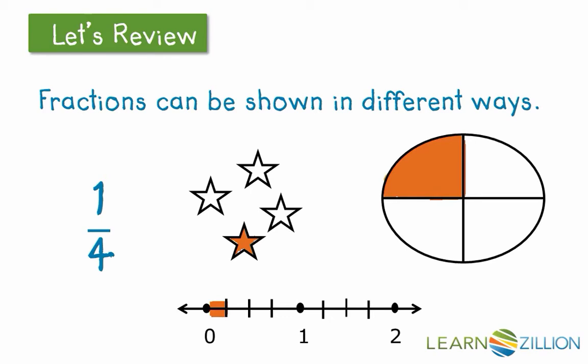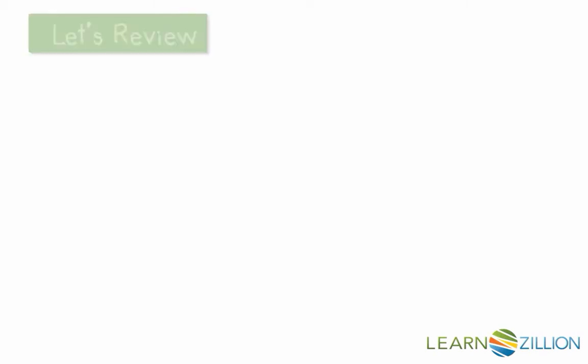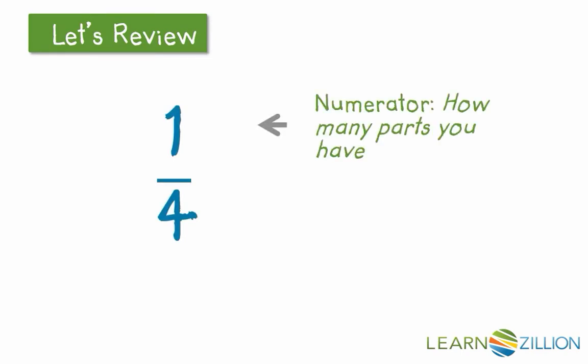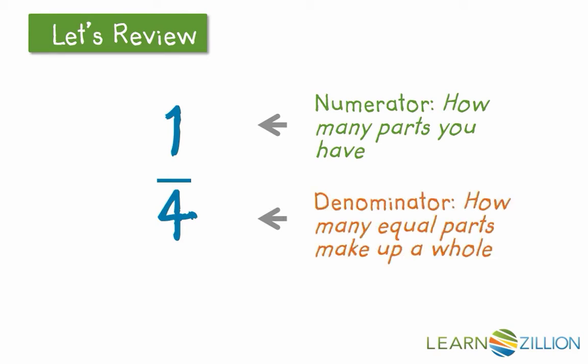And fractions can also be represented as decimals. You know that the top number in the fraction is called the numerator, and that's how many parts you have. And the number at the bottom of the fraction is called the denominator, and that is how many equal parts make up the whole.